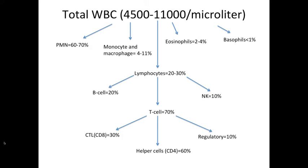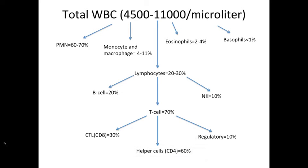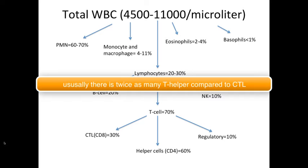You have three subtypes of T cells: cytotoxic T cells, also called CD8 cells; T helper cells, also known as CD4 cells; and regulatory T cells. The most common of these is the T helper cell, and there is usually a two-to-one ratio between your CD4s and CD8s.